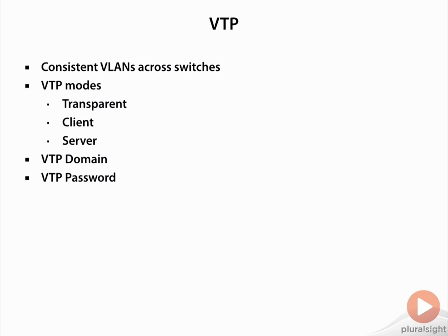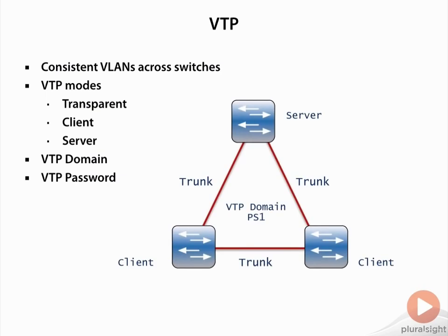Here's an example of a topology where we've got multiple switches — a server and a client. We've defined the VTP domain as PS1, so all of these switches are configured with the VTP domain PS1. It's also important to note that VTP updates are only sent across trunk ports. The two switches on the bottom are in client mode, and I had to manually configure them as clients because the default mode is server.